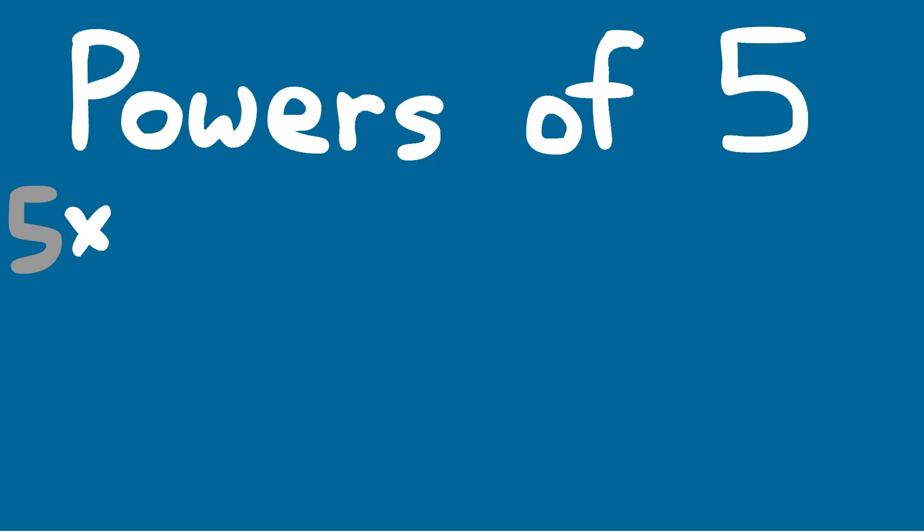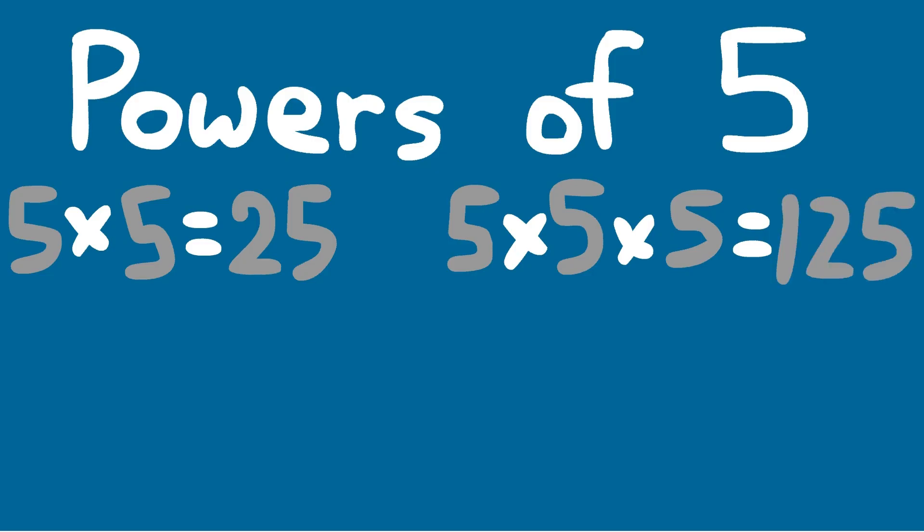5 times 5 is 25, 5 times 5 times 5 is 125, 5 times 5 times 5 is 625.